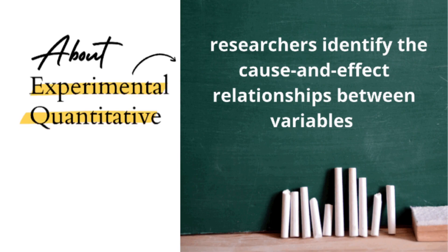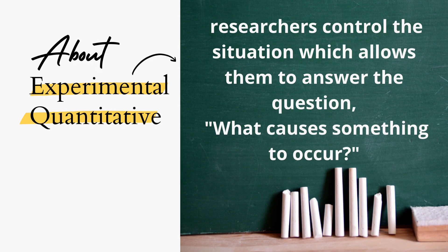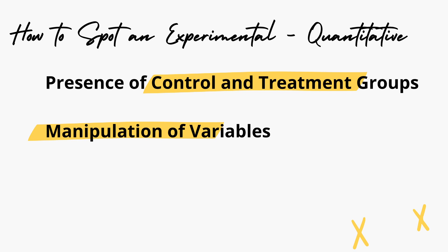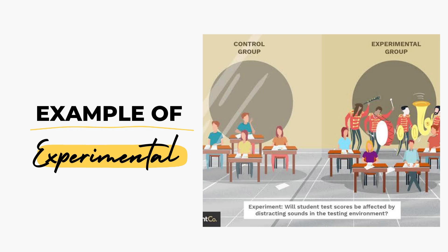The third type of quantitative research is experimental. It identifies the cause and effect relationship between and among variables. In this type of research, the researchers control the situation, which allows them to answer the question: what causes something to occur? To determine if it is experimental quantitative research, you can check for the presence of control and treatment groups and manipulation of variables. An example is determining the test scores of students — one group took the test in a quiet, calm environment, while the other took it in a very loud and noisy environment.